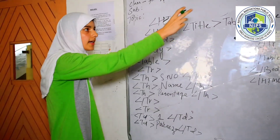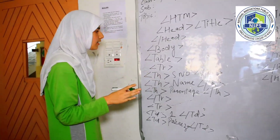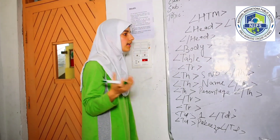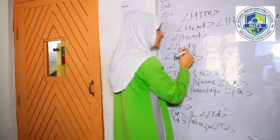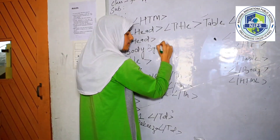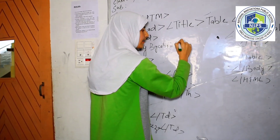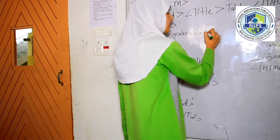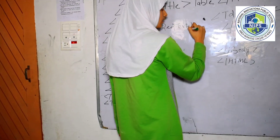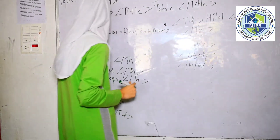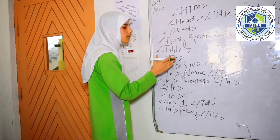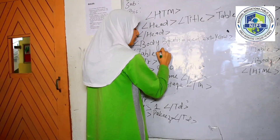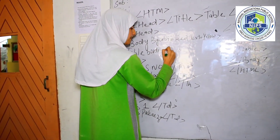As per our coding, our table will be prepared. Now we can give some attributes. For example, if we want our background not to be white, we can give 'bgcolor' — for example, red. Or if we want our text color, we can give 'text' equal to yellow. Then we can give a border attribute — for example, border equal to 2.